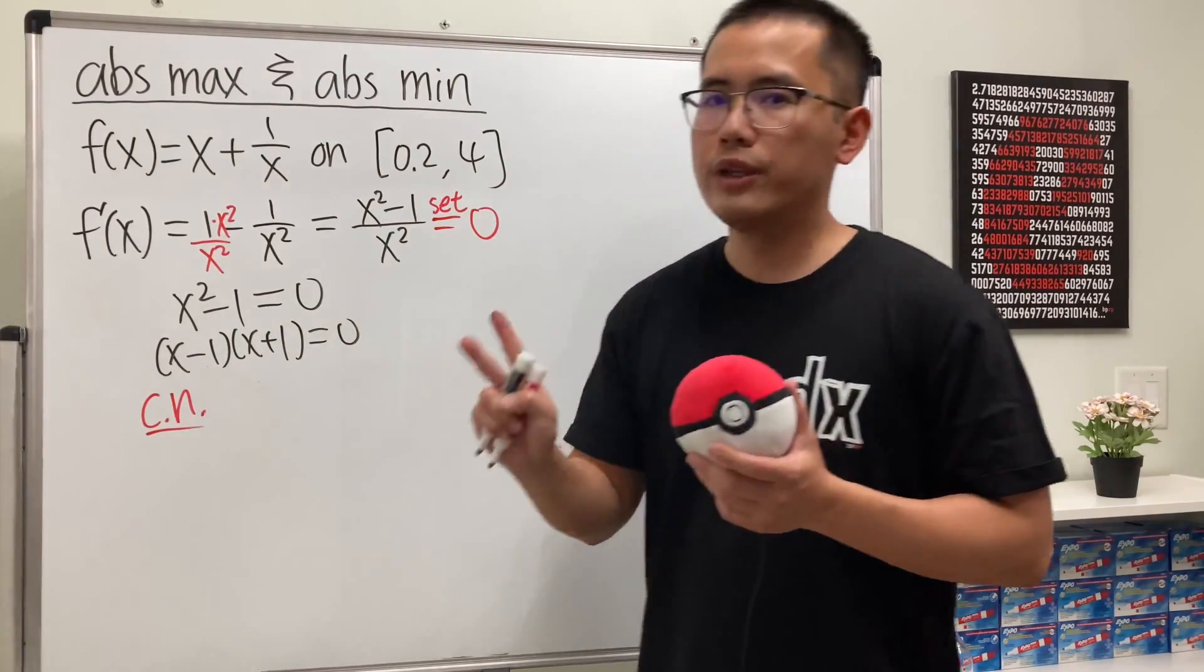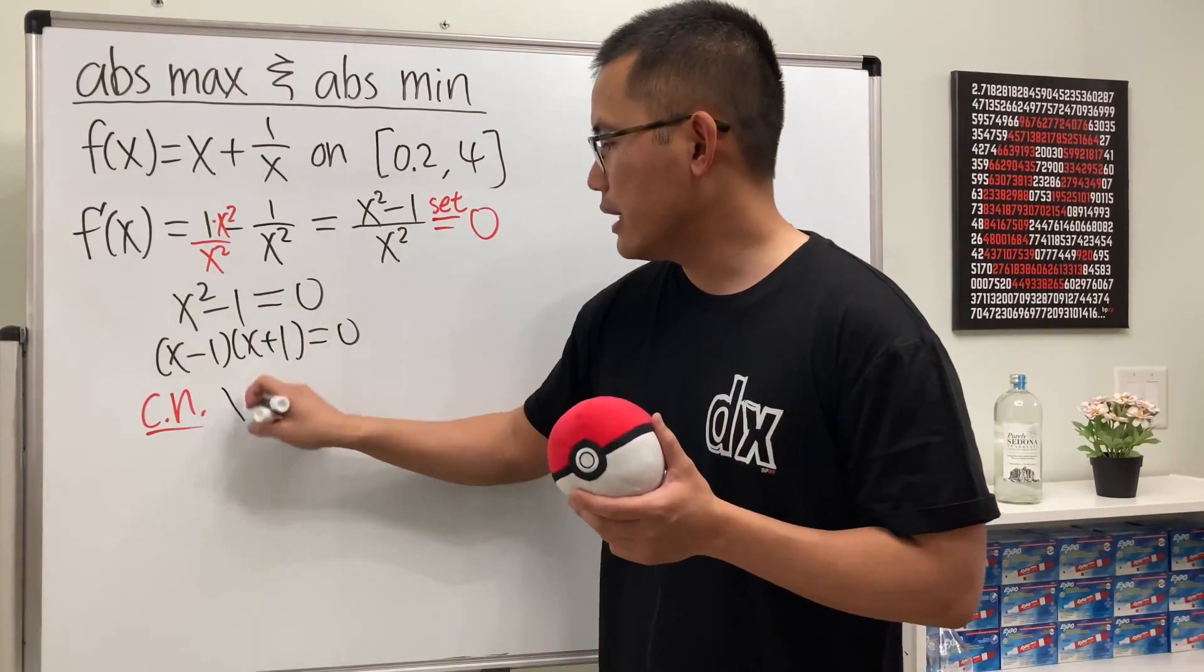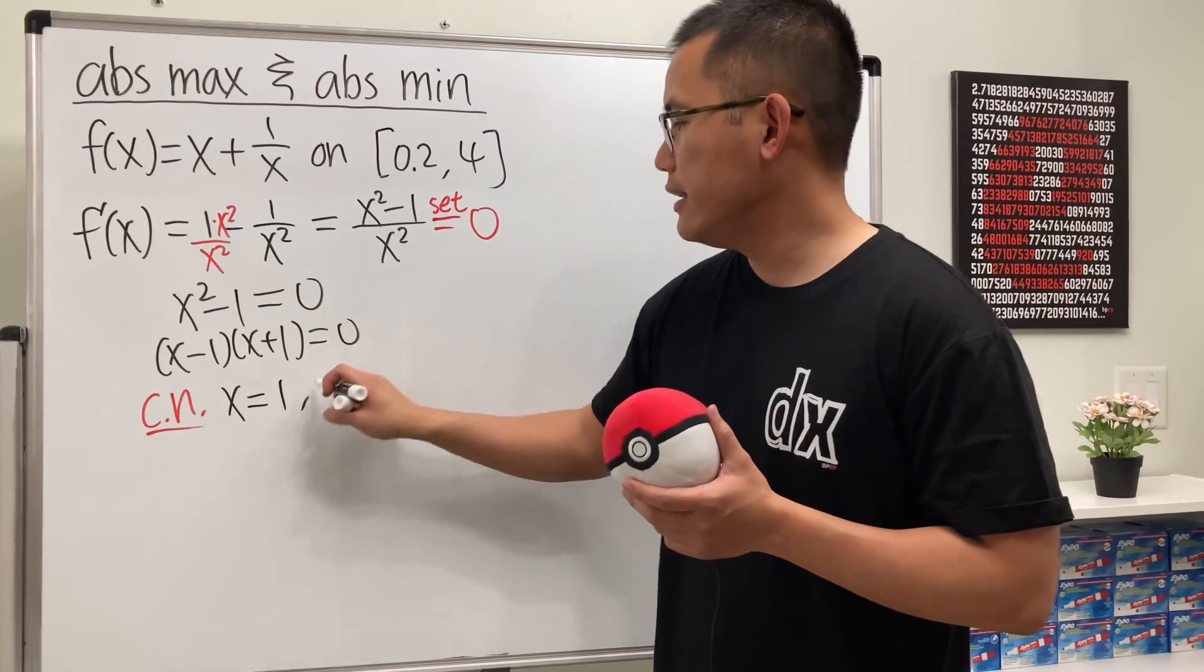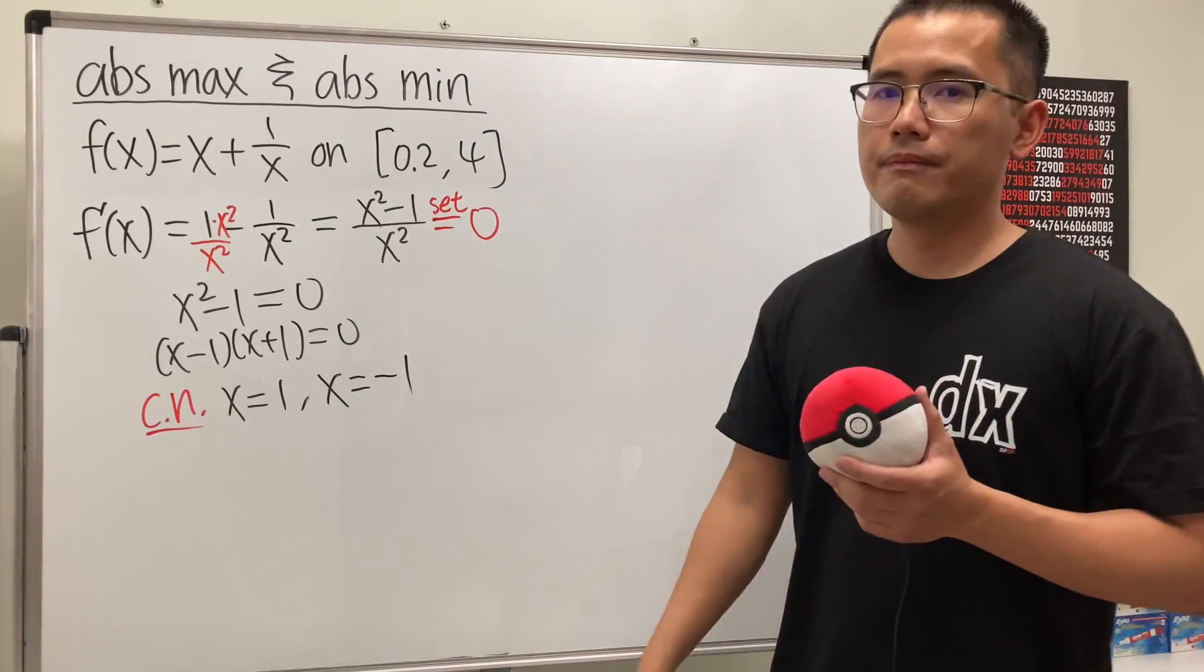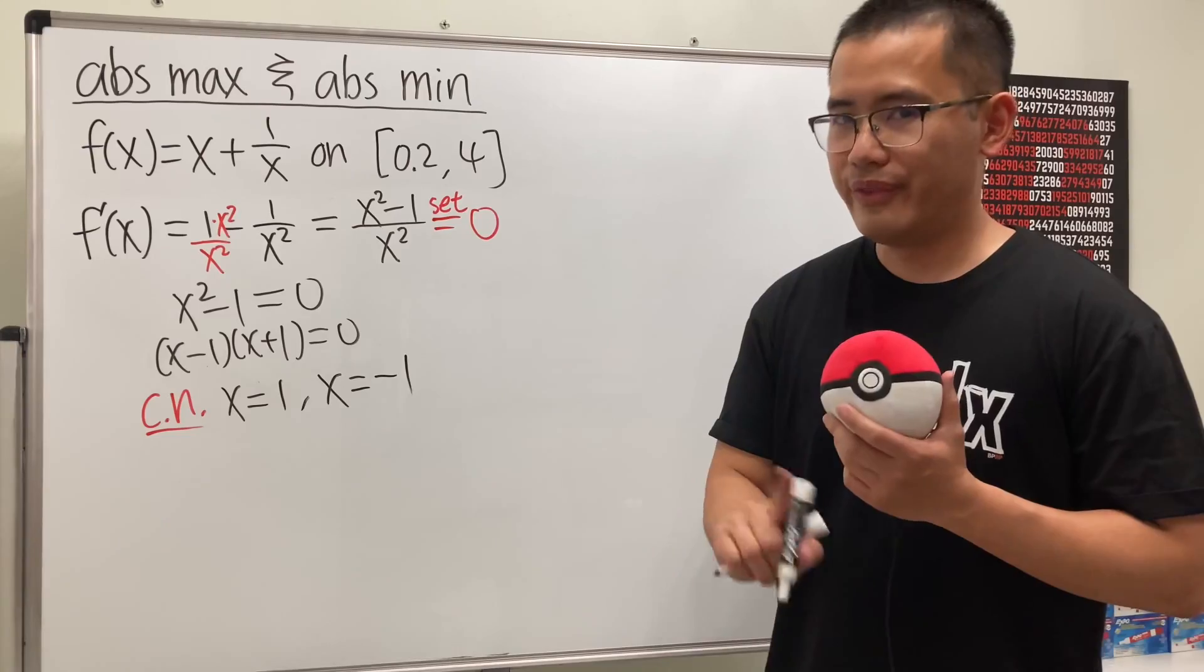And from here, we have two critical numbers. The first one is at 1, and the other one is at negative 1. But do we need both? No.